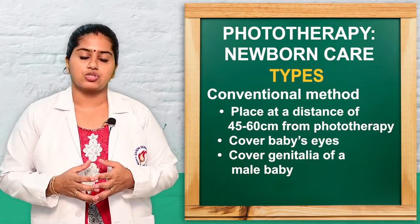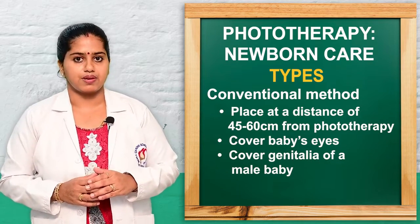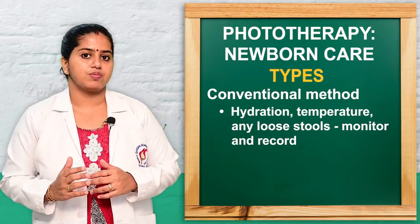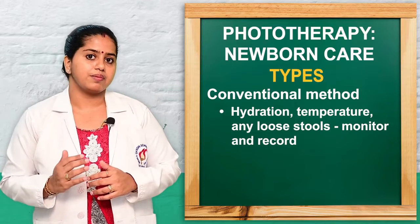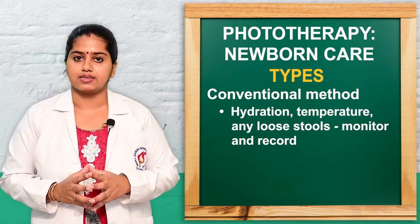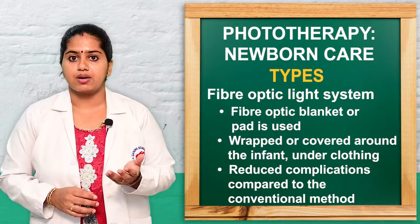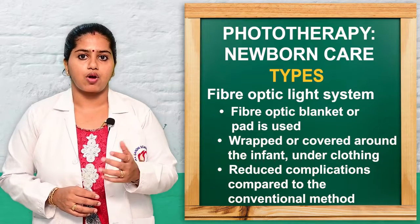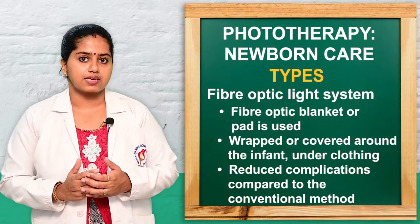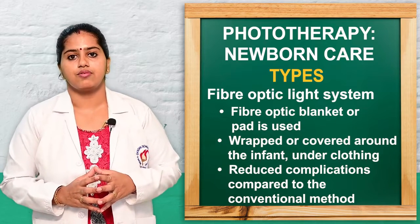When placing the baby, we should cover the baby's eyes, and if it is a male baby, cover the genitalia. Always monitor the baby's hydration, temperature, whether the baby is having any loose stools, and other side effects — these should be recorded by the nurse. The second type is fiber-optic, which can be given by blanket or fiber-optic pads placed over the baby's skin. This has fewer complications than the conventional method.